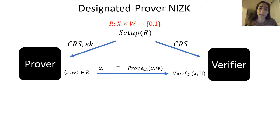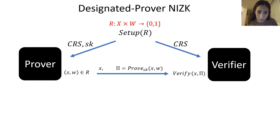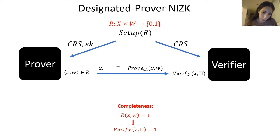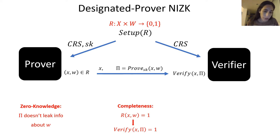Given such a protocol, we want it to satisfy three properties. For completeness, we want that if X and W are indeed in the relation, then the proof generated by the prover will be accepted by the verifier. The two other properties concern security. One is the security that the prover cares about, and the other is the security that the verifier cares about. The prover cares about zero knowledge, which means it doesn't want to leak any information about the witness W used to generate the proof.